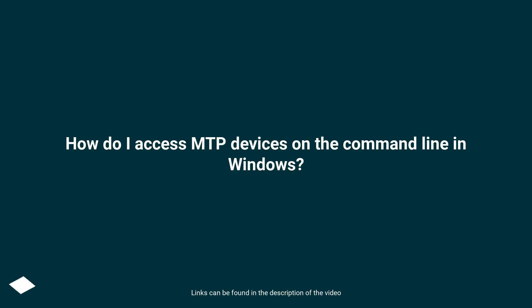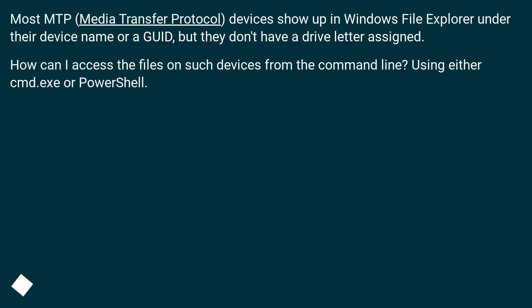How do I access MTP devices on the command line in Windows? Most MTP, Media Transfer Protocol, devices show up in Windows File Explorer under their device name or a GUID, but they don't have a drive letter assigned. How can I access the files on such devices from the command line, using either cmd.exe or PowerShell?